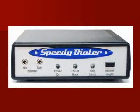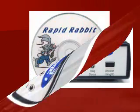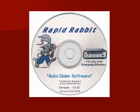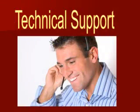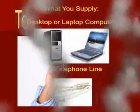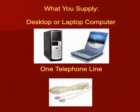When you buy this product, you get Speedy Dialer hardware, RapidRabbit software, a microphone headset for recording, all the connecting cables you'll need, plus technical support if you need any help. All you'll need to supply is a desktop or laptop PC and one standard analog telephone line.